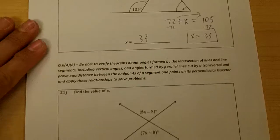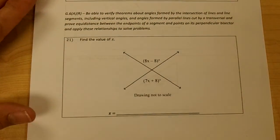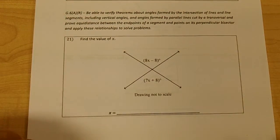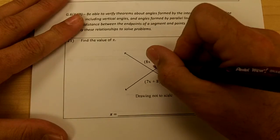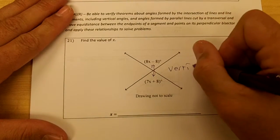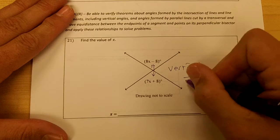And then let's slide down to 21. Find the value of x. These two angles are what kind of angles? They're vertical, aren't they? And vertical angles are equal.